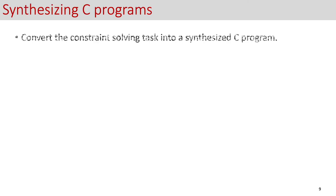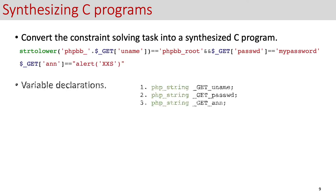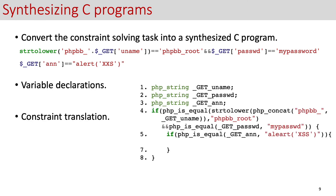Given the constraints, we synthesize the C program by converting the constraint-solving task. For example, given the type information collected in the cross-language integration, we first declare the variable types using the type information in the PHP type wrappers. We then equally transform the PHP constraints into the C code in the if conditions, where we replace the PHP operators with the corresponding macros.